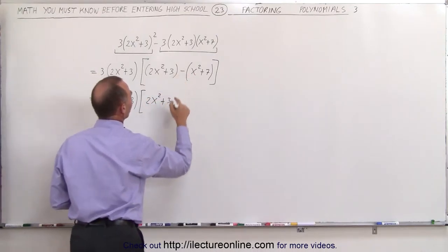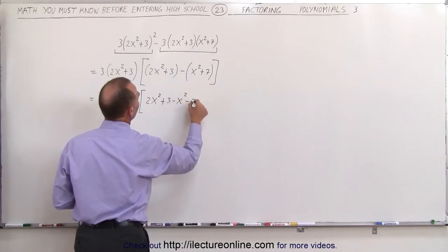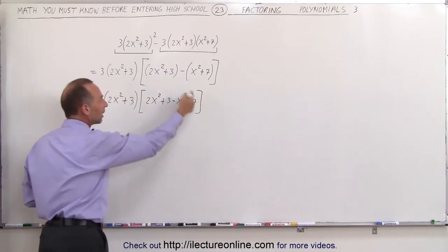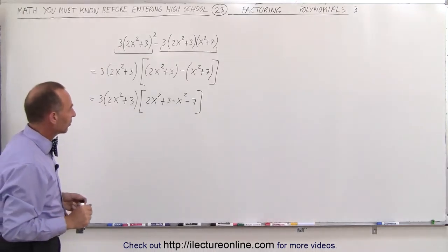and this negative sign applied to that becomes minus x squared minus 7. Now we can collect common terms in what's inside the brackets here.